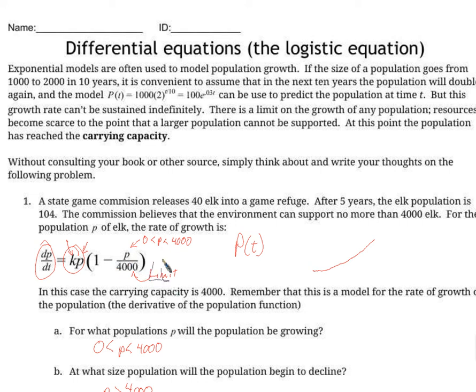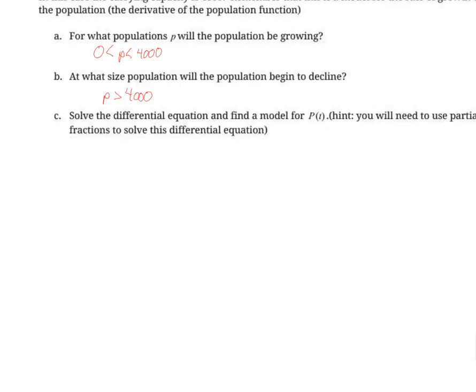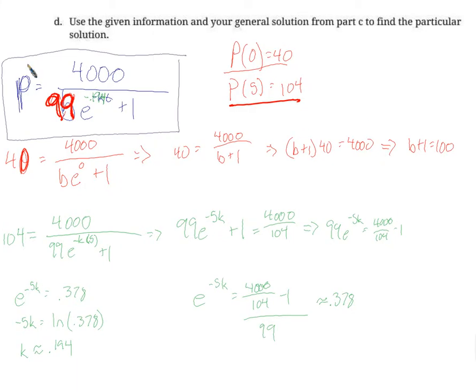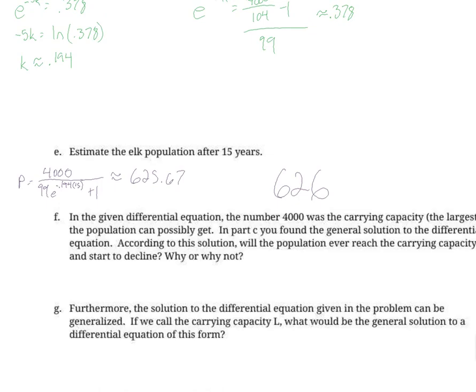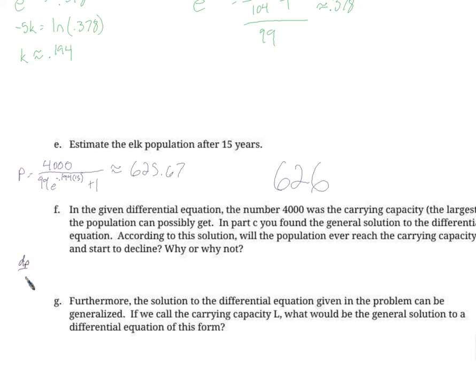And the only difference is that instead of 4000 we'll have written L. So then let's take a look at that solution we had. The solution in general for us was p equals 4000 over b times e to the negative kt plus 1. If 4000 were just replaced with L, then in general anything that looks like this, dp dt equals kp times 1 minus p over L, will have a solution, a general solution of p equals L over b e to the negative kt plus 1.